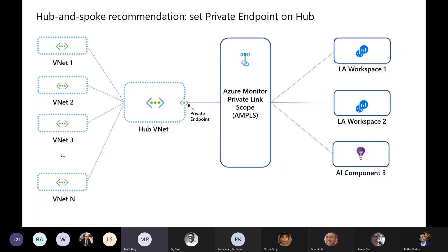How does this play into enterprise scale architecture — would you put it in the networking hub or the monitoring management hub? This is more like a management hub, because you may have multiple workloads: VNet one is your finance department, VNet two is marketing, VNet three is IT. It makes more sense to send all that data to a central workspace to centralize your logging requirements. You could put it in your networking hub, but the networking hub is usually used for your ExpressRoute circuits and connectivity back to on-premises.